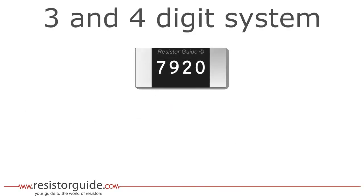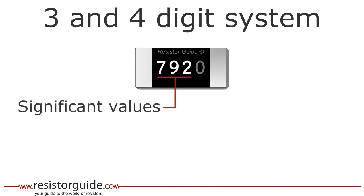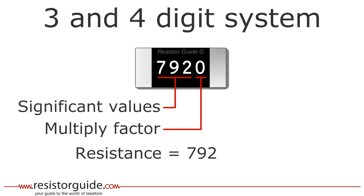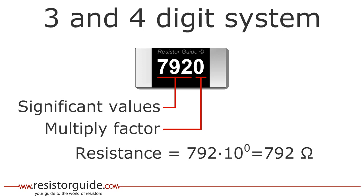Now we consider a 4 digit code. Here the first three digits represent the significant values of the resistance. This code is used for more accurate resistors. The fourth digit is the multiply factor. For this example, the resistance is 792 times 10 to the power of 0, which results in 792 ohms.